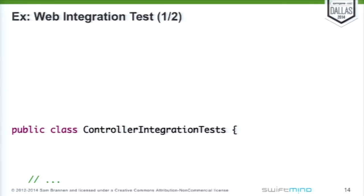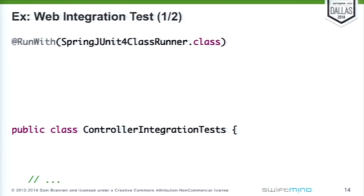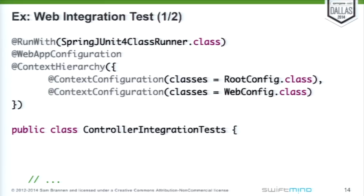So here, putting it all together: if we wanted to write a web integration test with Spring 3.2.2 using all of the standard features, we start with a class — public class ControllerIntegrationTests. We start adding in the annotations from Spring, starting with @RunWith from JUnit, instructing JUnit to use the SpringJUnit4ClassRunner. Next we declare @WebAppConfiguration, which says we want Spring to load a web application context. Then @ContextHierarchy — we can declare different levels of application context for this test, matching what we have in production code.